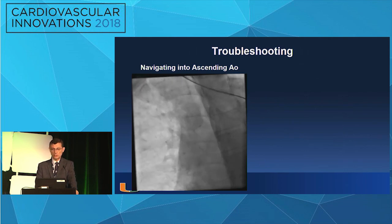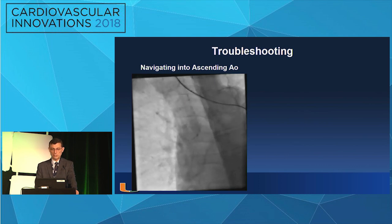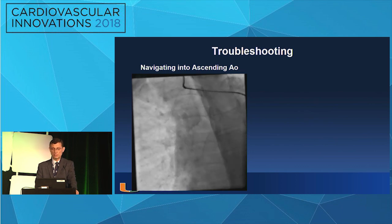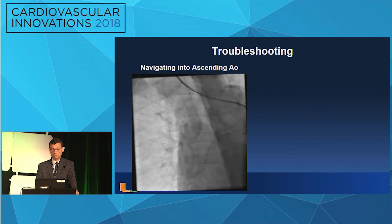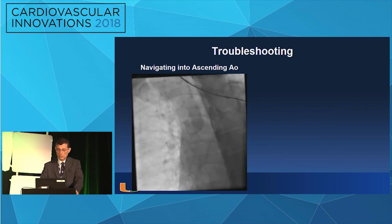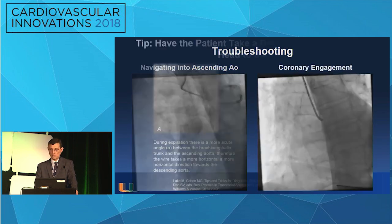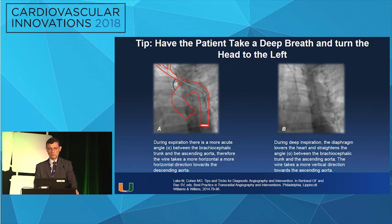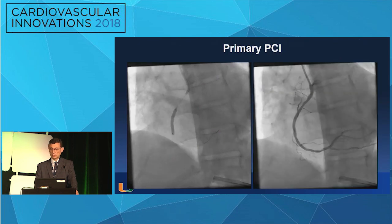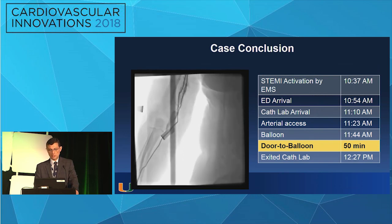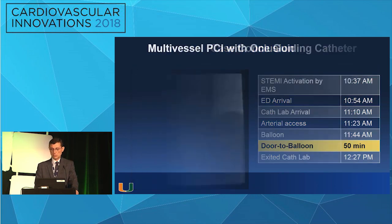The catheter is going down to the descending — what you need to do is have the patient take a deep breath and redirect. For support, I put an 0.035 wire — that's another tip: you can put an 0.035 wire along with the 0.014 wire just to support your manipulations a little bit better. Then we engage the coronary, and the deep inspiration straightens everything up. We balloon and stent that, and then we have a happy finish. The door-to-balloon time was 15 minutes and the patient can sit up — hemostasis is achieved.